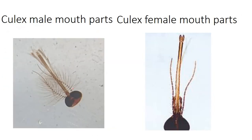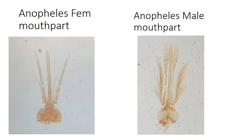Looking at mouth parts: female mosquitoes have short palpi and a less bushy antenna. In a male, the antenna is bushy and the palpi are as long as the proboscis. Anopheles is the exception where the palpi is large even in the female compared to the proboscis. When the palpi are club-shaped and antenna is bushy, it is an Anopheles male. When the antenna is not bushy and the palpi are long, it is an Anopheles female.